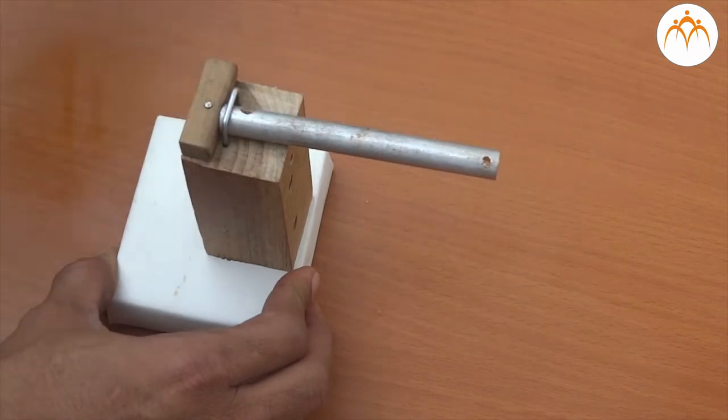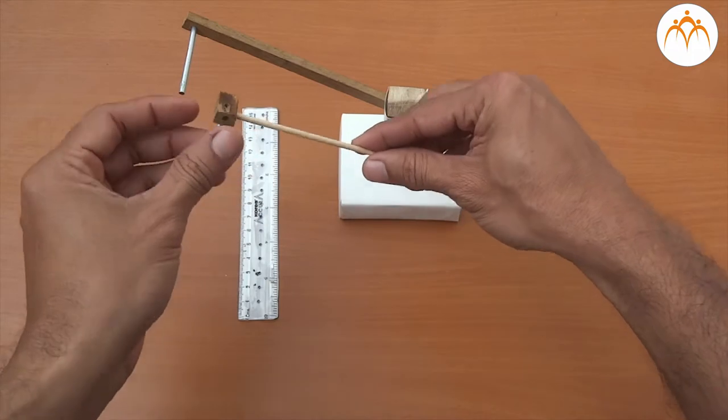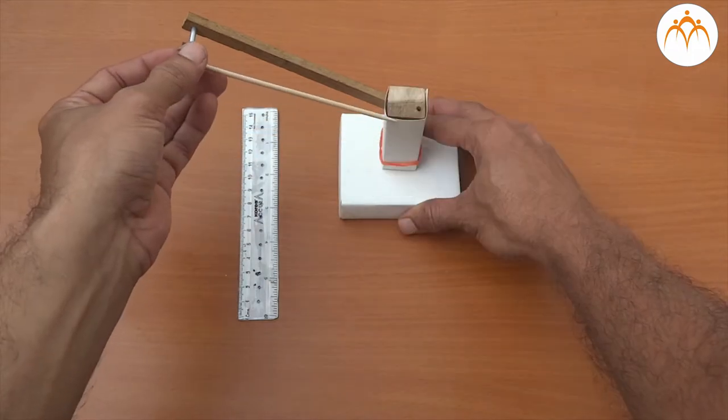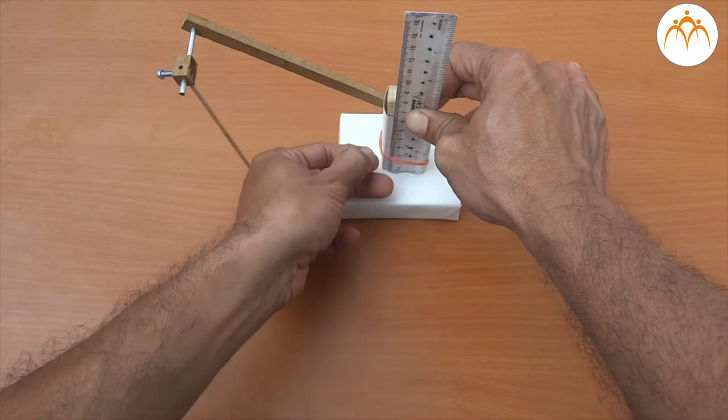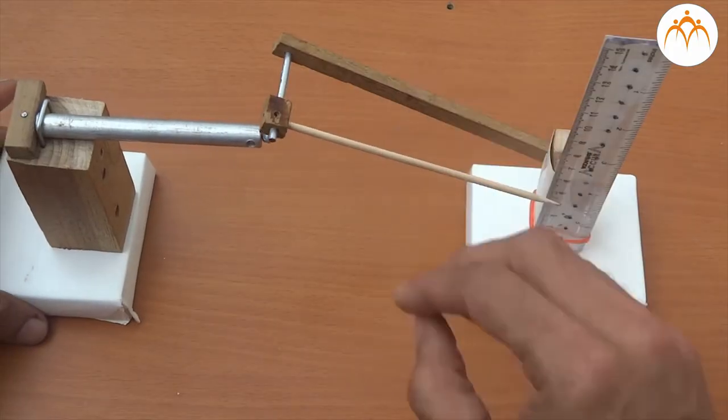Aluminum rod can expand only in one direction. I will attach this mechanism to the other end. This mechanism allows us to see the small expansion of aluminum rod on the ruler.